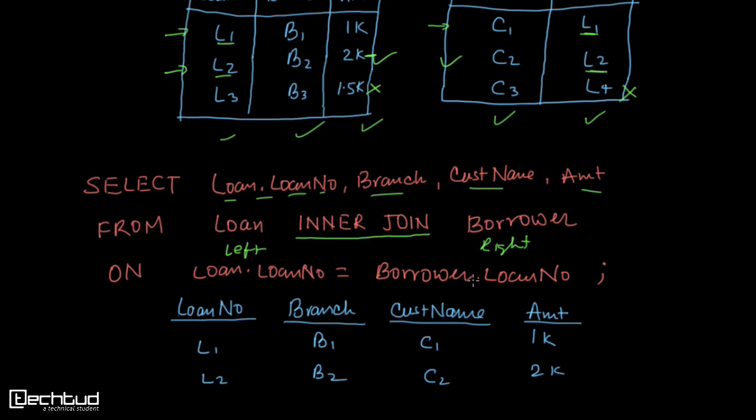so that you can see the output and understand it well. In the next lecture we will understand what is outer join and how records from one table are taken while another table can be ignored. Thanks for watching.